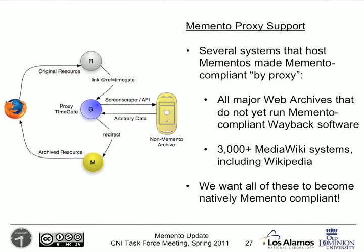We realize it's going to be quite a while before everyone becomes Memento compliant. So we've also made quite a lot of progress in proxy support — systems hosted by Los Alamos and Old Dominion which make internet sites that have snapshots of versions Memento compliant by proxy. All of the MediaWiki systems we know about are compliant by proxy, including Wikipedia and Wikia. Of course we'd prefer that everything natively supported Memento, however we realize this is a stopgap measure.